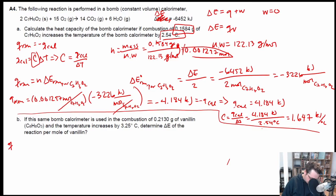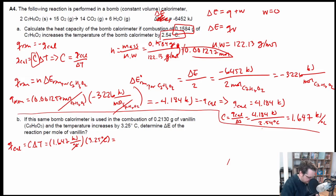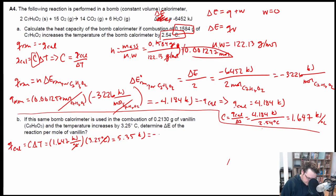Q of the calorimeter equals C times delta T. C is 1.647 kilojoules per degree Celsius and delta T is positive 3.25 degrees Celsius, so degrees Celsius cancels. Q_cal equals 1.647 times 3.25, which comes out to 5.35 kilojoules. Since Q_rxn equals negative Q_cal, Q of the reaction equals negative 5.35 kilojoules.